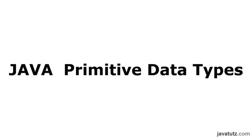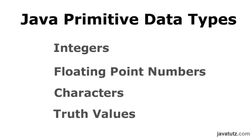Primitive data types are basically to handle simple data values like height, temperature, number of customers, and customer ID. Java has primitive data types to hold four kinds of values: integers, floating point numbers (that means decimal numbers), characters, and truth values.